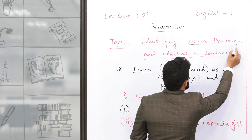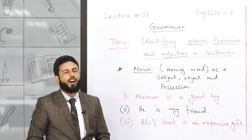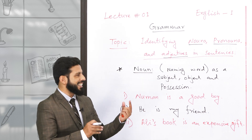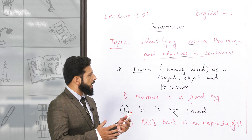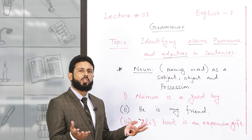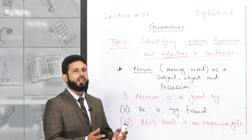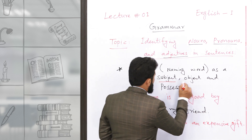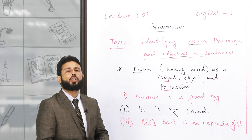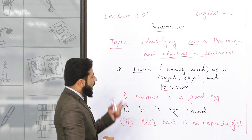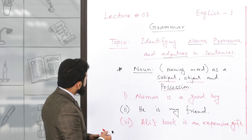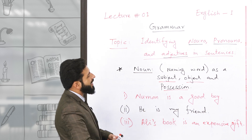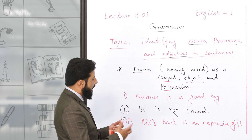جب آپ لوگ nouns, pronouns اور adjectives معلوم کر سکیں گے تو اس کا مطلب ہے کہ آپ لوگ سمجھ چکے ہیں۔ Noun جو ہے یہ naming word ہے اور دنیا میں جتنی بھی چیزیں ہیں — چاہے انسان ہو، حیوان ہو، درخت ہو — اگر اس کا کوئی نام ہے تو وہ noun ہے۔ Sentence number one دیکھیں: 'No man is a good student'۔